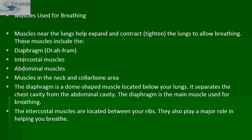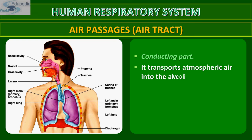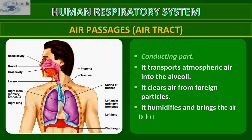The diaphragm is a dome-shaped muscle located below the lungs. It separates the chest cavity from the abdominal cavity and is the main muscle used for breathing. The intercostal muscles are located between the ribs and also play a major role in helping you breathe. The air passage or air tract is the conducting part of respiration — it transports atmospheric air into the alveoli. The alveoli are the terminal part of the lungs. The air passage also clears air of foreign particles through cilia in the nose, and humidifies and warms air to body temperature.